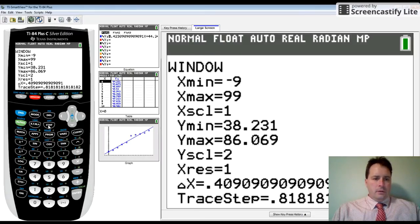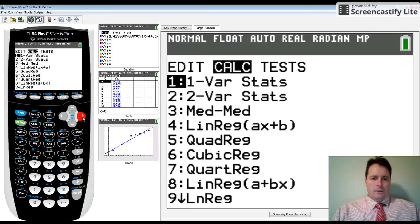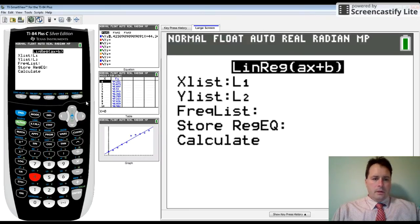The next thing I want to do is make a line of best fit. I'm going to hit stat, arrow over to calc, choose number four, and go down to store my equation under Y1.